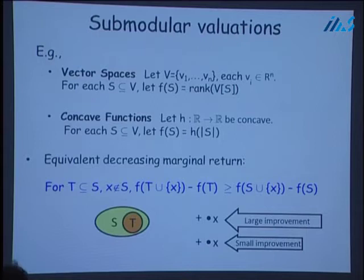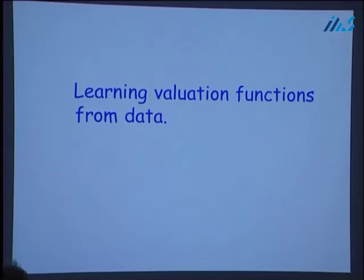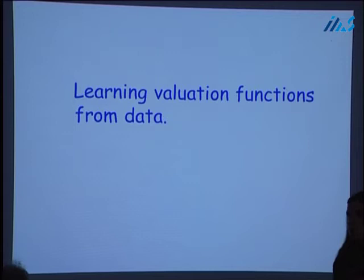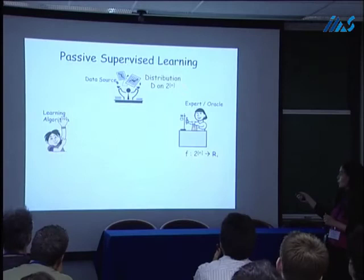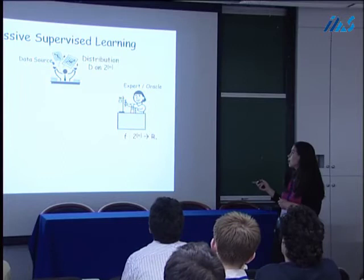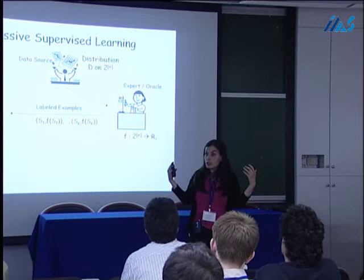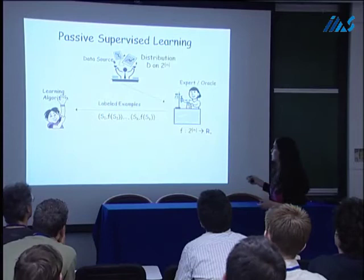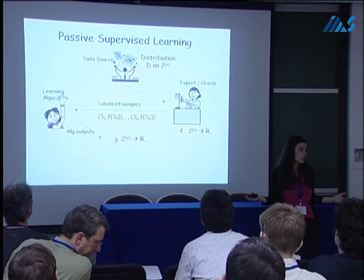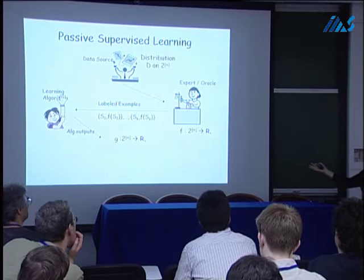In this work we study the learnability of such valuation functions from data. We consider a distributional learning model and develop a PAC-style analysis for this scenario. The learning model is as follows: we assume some distribution over unlabeled examples. These examples get labeled according to some fixed but unknown target function, which we think of as being sub-modular — for example, the valuation function of a customer. These labeled examples are input to a learning algorithm which outputs a hypothesis function. The goal is to design a learning algorithm that outputs a hypothesis function close to the target function on most examples coming from the same source.